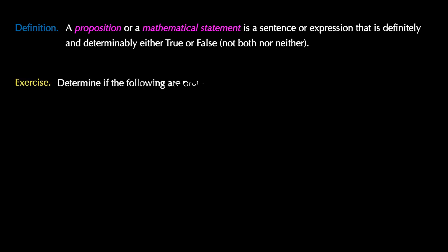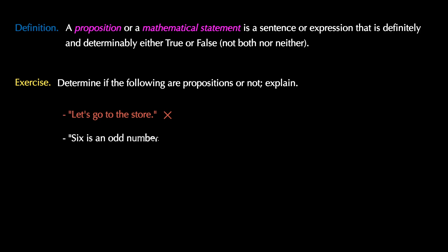Let's look at a couple of examples to determine if the following are propositions or not. 'Let's go to the store' — this is not a proposition; it's an imperative statement and cannot be determined to be true or false. 'Six is an odd number' — this is a mathematical proposition because it can be determined to be false. 'The sky is beautiful' — this is a subjective statement, so it is not a proposition.